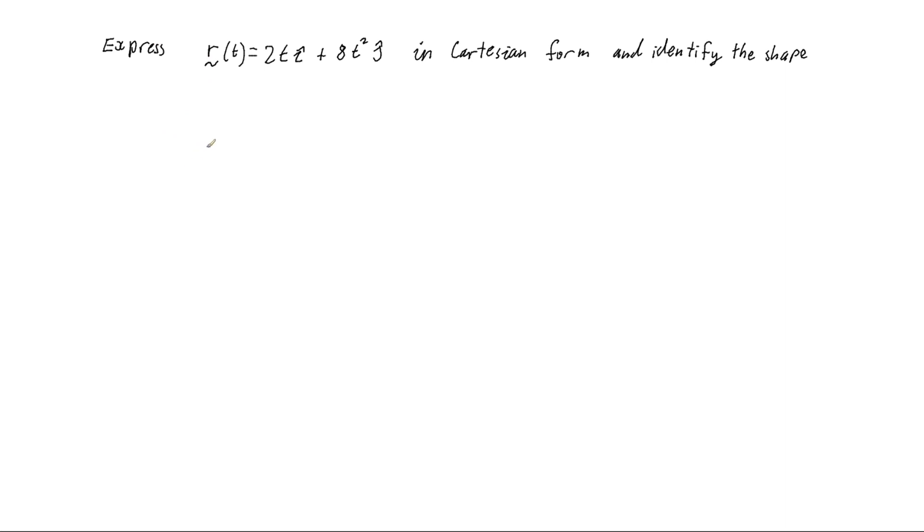All right, in this video I'm looking at this problem here where we're expressing this vector equation r(t) = 2ti + 8t²j in Cartesian form and then from that identify what shape the curve would be if it was graphed.